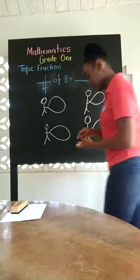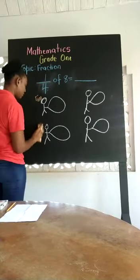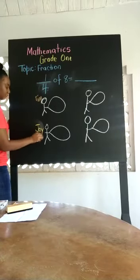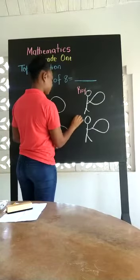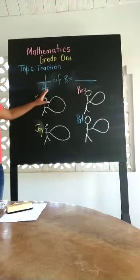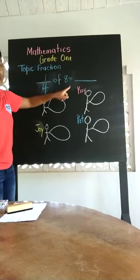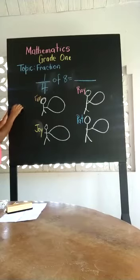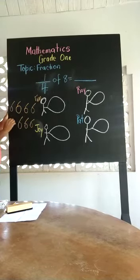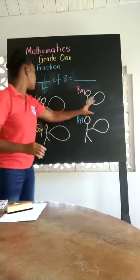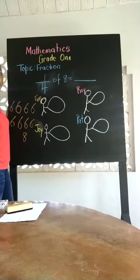Now we have four persons on the board: Tim, Joy, Roy, and Pat. These four persons represent the amount that we have to share — one, two, three, four. We are sharing eight apples: one, two, three, four, five, six, seven, eight. So we have eight apples and we are sharing them amongst four persons. When we are sharing, each person must get an equal amount of apples.